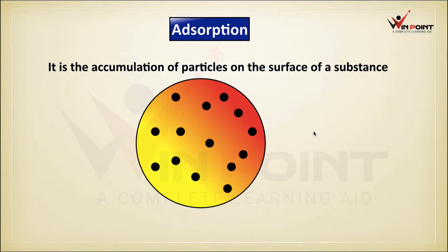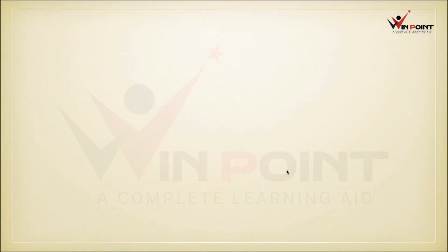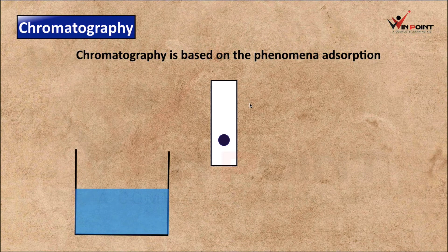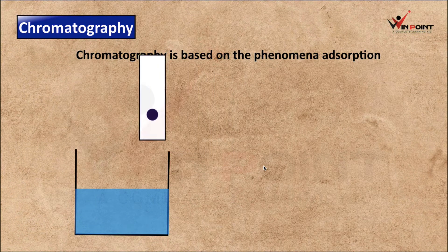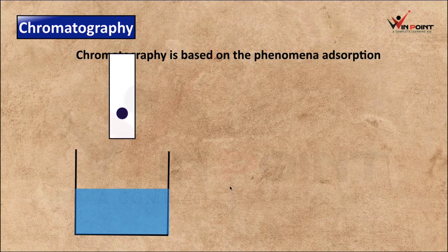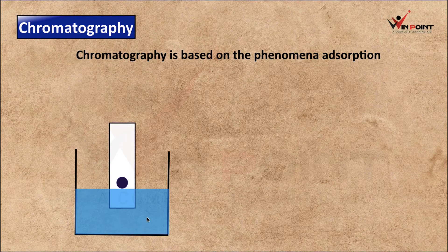The working principle of chromatography is adsorption. In the experiment, we take water in a container with a filter paper and a drop of ink. We place that filter paper inside the water. The water rises up through the filter paper — this phenomenon is known as capillary rise.